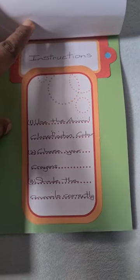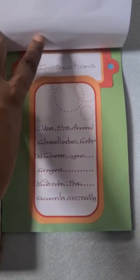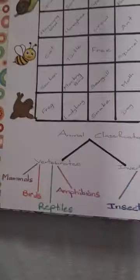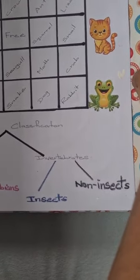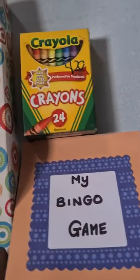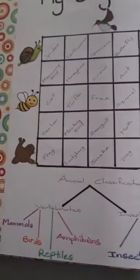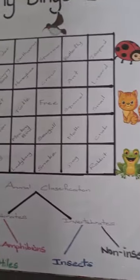Now here we have instructions. First, we are using the animal classification at the bottom. Then we are using these crayons to shade the animals. And thirdly, we are going to shade animals correctly.